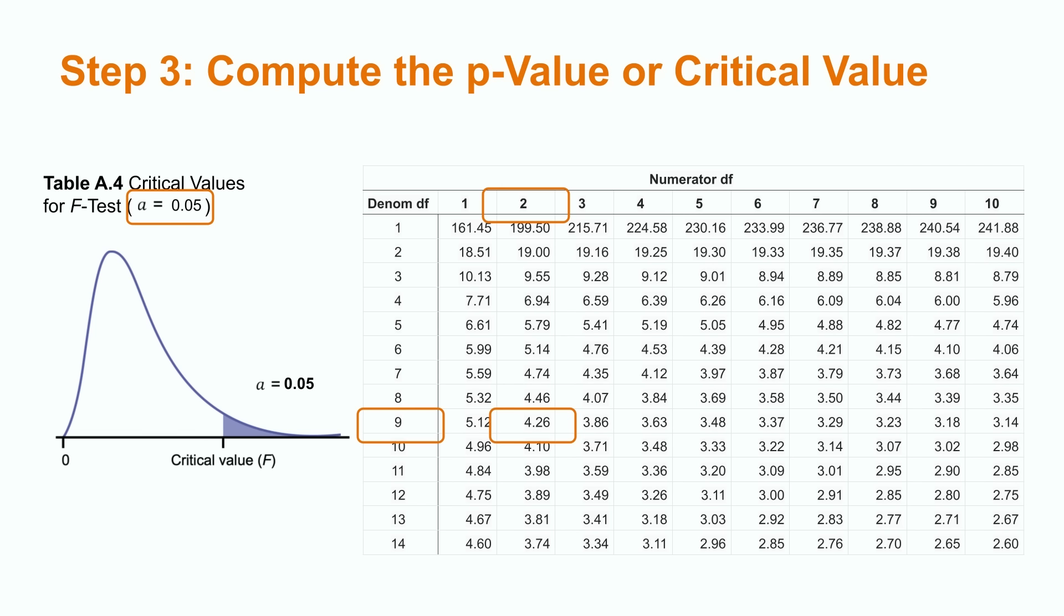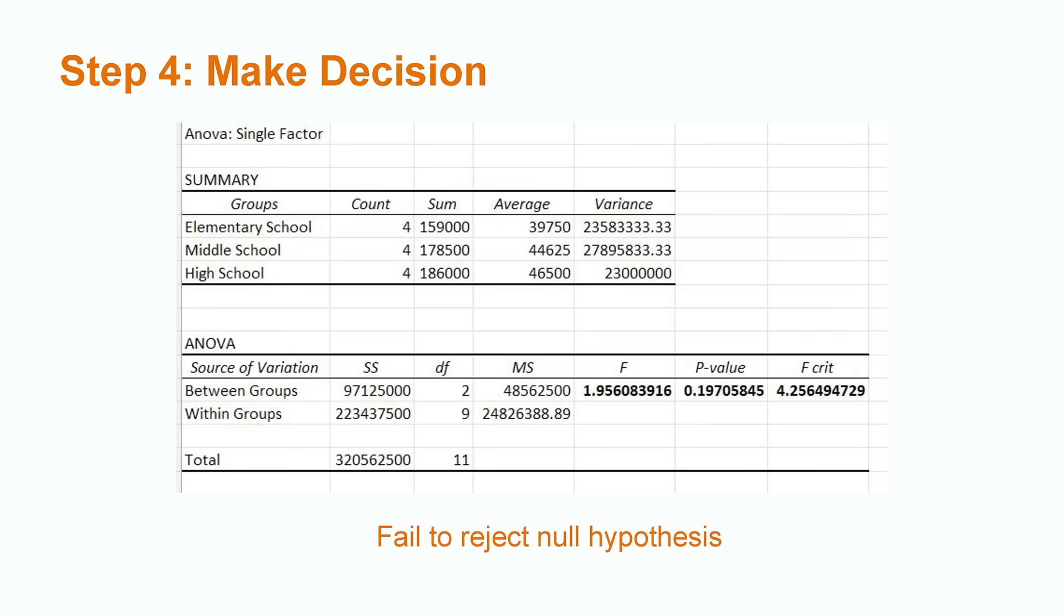Please note that ANOVA critical values are always right-tailed and cannot be negative. Using either the p-value approach or the critical value approach, we can determine whether or not our difference in means is statistically significant at the 0.05 level of significance.